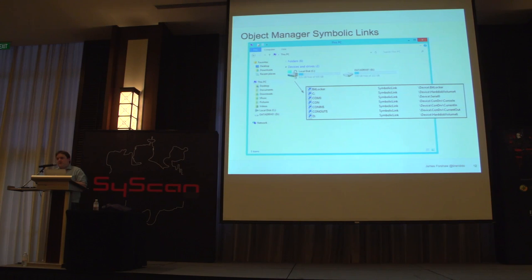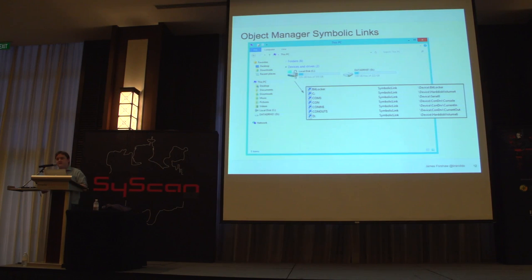I'm going to go through each of those four types and show you how they're implemented in Windows and what sort of things you can do with them. Starting with the absolute core symbolic link — the object manager symbolic link. You'll be using this every single day and probably don't even realize it. Things like drive letters are actually implemented using these object manager symbolic links. Under the hood, there's a symbolic link called C: which, when you try to access your file system, redirects to the actual mounted volume in the object manager.